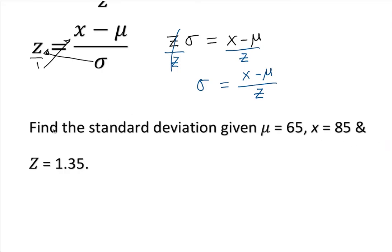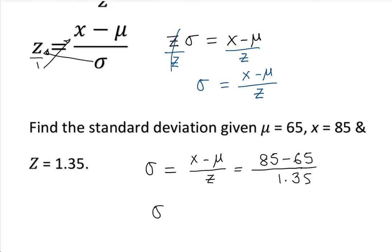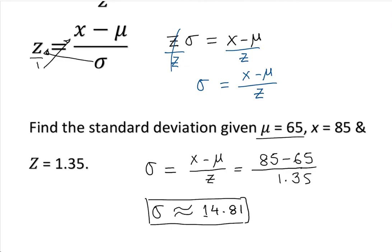Let's look at an example. Find the standard deviation given mean equal to 65, x equal to 85, and z-score equal to 1.35. I have the formula, so I just replace the values: population standard deviation equals x minus population mean over z-score, which is 85 minus 65 over 1.35. If you plug it into a calculator, it gives you approximately 14.81.